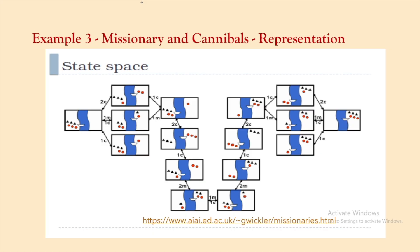In the state space diagram, starting with all 3 cannibals and 3 missionaries on the left with the boat, if the action is 2 cannibals going across, then 2 cannibals are on the right side. If the action is 1 missionary and 1 cannibal, then you have 1 cannibal and 1 missionary on the right and 2 cannibals and 2 missionaries on the left. The search proceeds until it reaches the final state with 3 cannibals and 3 missionaries on the right side.